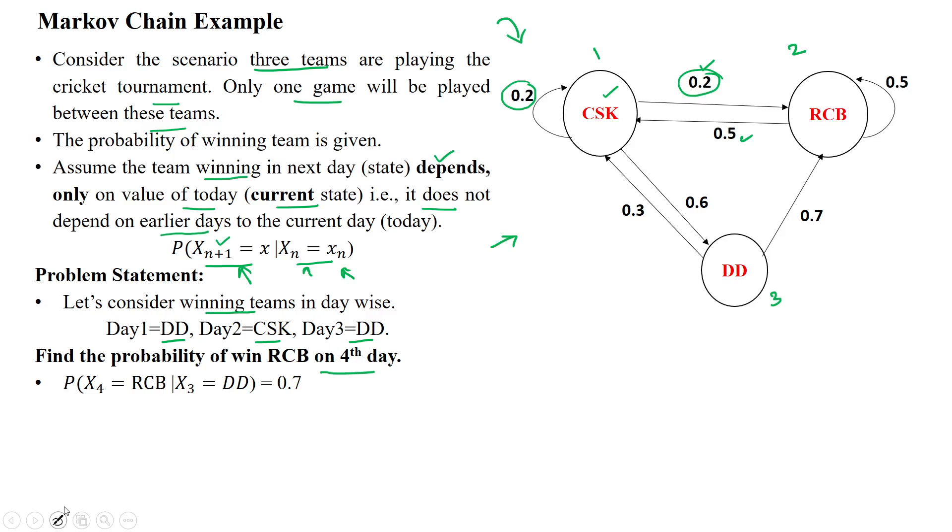On the day 1, the Delhi Daredevil has won. On the day 1, Delhi Daredevil has won. Day 2, CSK has won. And day 3, Delhi Daredevil again it has won. Day 3 also, Delhi Daredevil has won. Now, what is the probability of RCB will win on the fourth day.